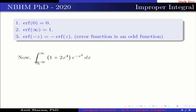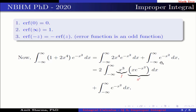Now, the integration from −∞ to ∞ of (1 + 2x⁴)·e^(−x²) dx is split as 2·∫_{−∞}^{∞} x³ · (x·e^(−x²)) dx plus ∫_{−∞}^{∞} e^(−x²) dx. Here x³ is represented by f and x·e^(−x²) is represented by g′.